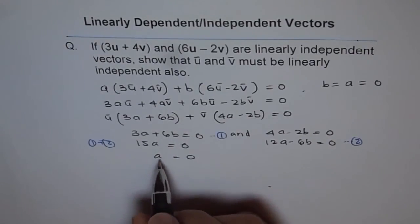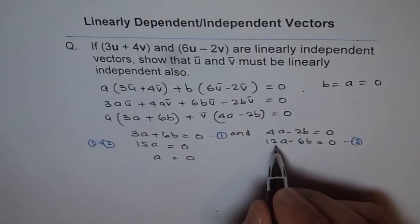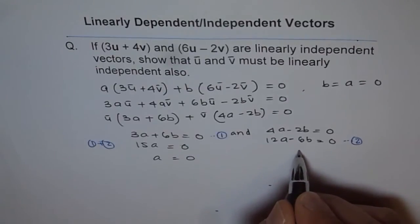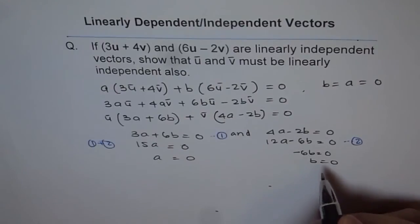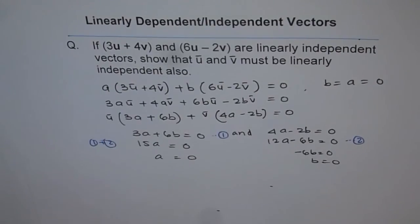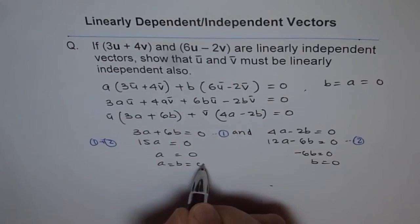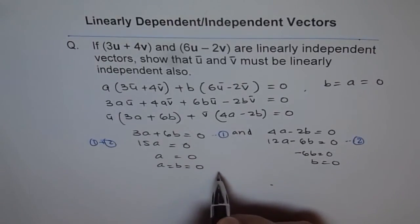Now if I substitute a = 0 here, then I get -6b = 0, or b = 0. So the only solution we get here is a = 0 and b = 0.